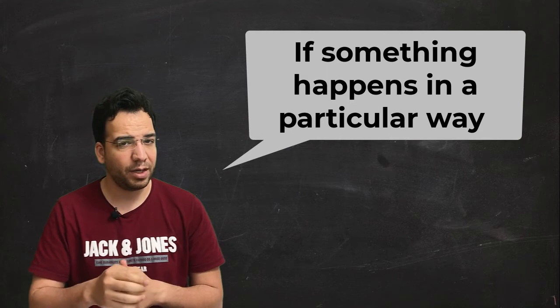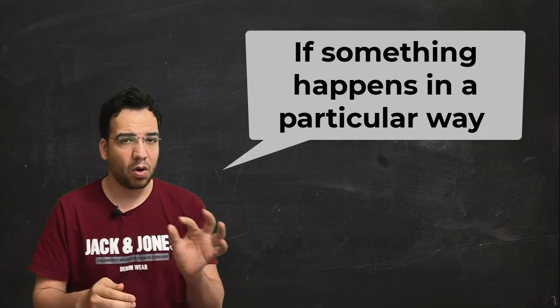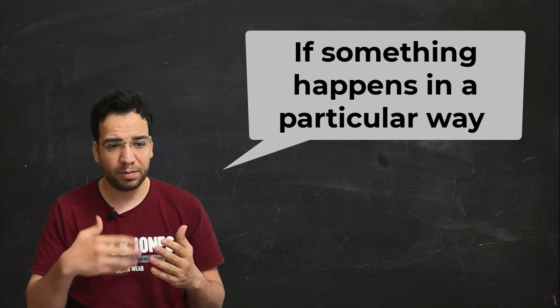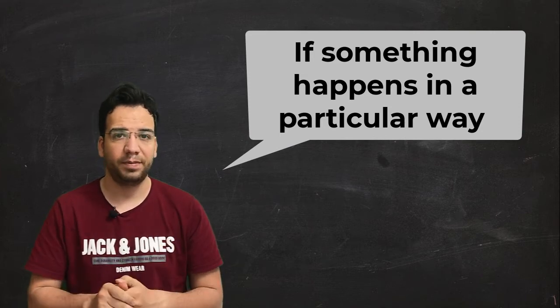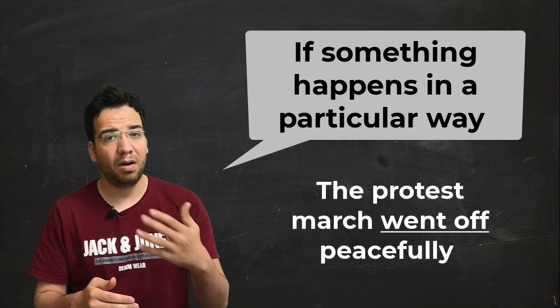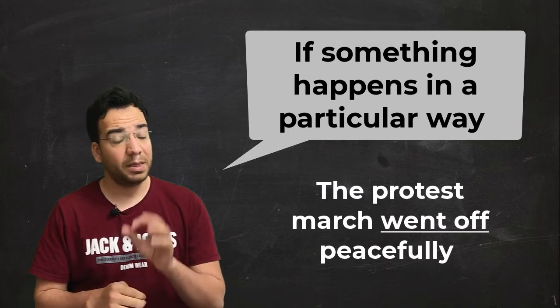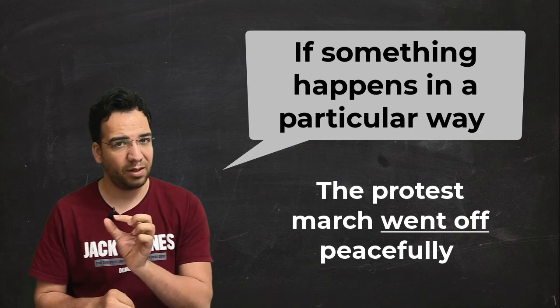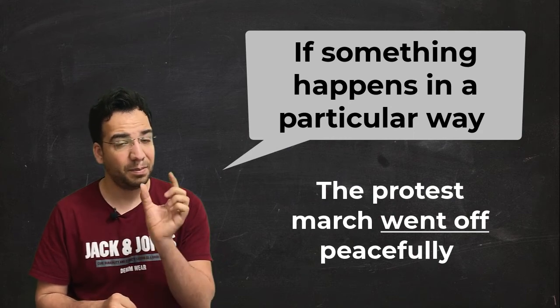My dear friends, if something happens in a particular way, we can use the phrasal verb go off. Yes, when we speak about something that happens in a special and particular way. For example, the protest march went off peacefully. So it happened in a particular way, and that's very peaceful.